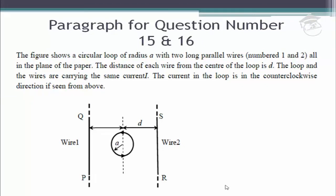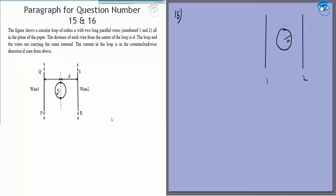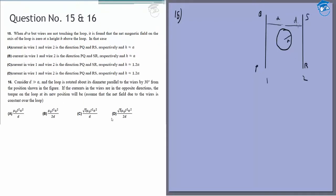We are given two wires 1 and 2, and a loop of radius a. The two distances are d each — this is PQ and this is RS — with a particular direction of current. The figure shows the circular loop and two parallel lines; the distance from the center is d. The current in the loop is in the counterclockwise direction.